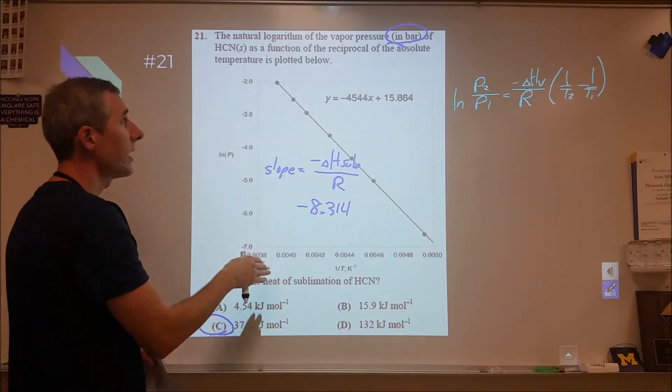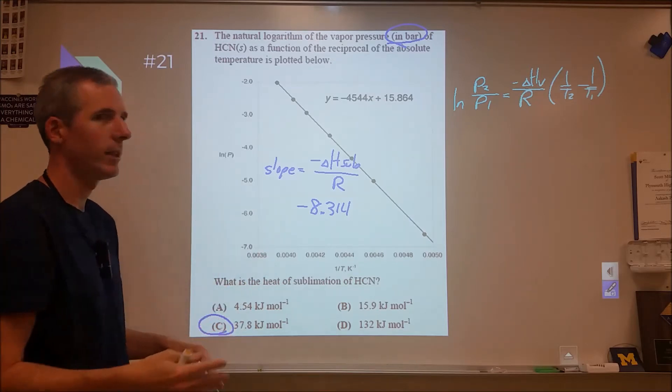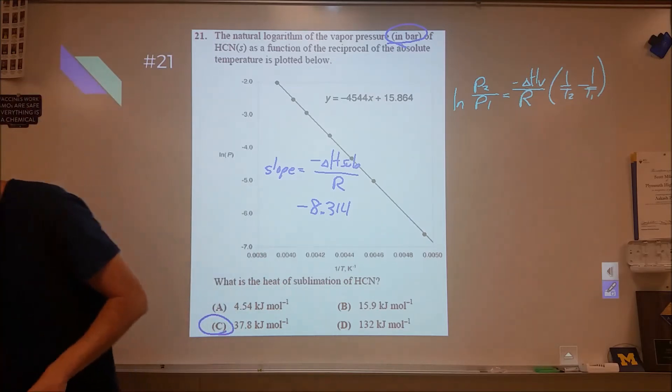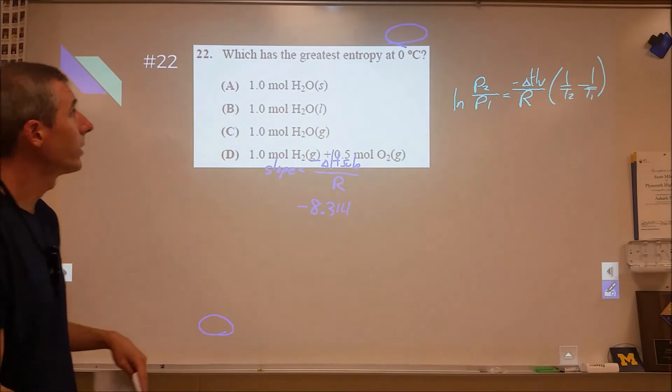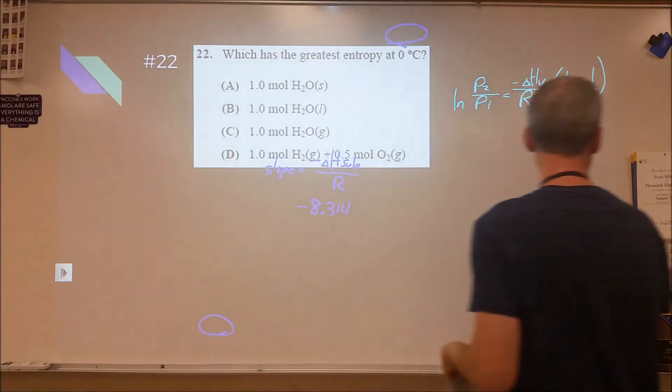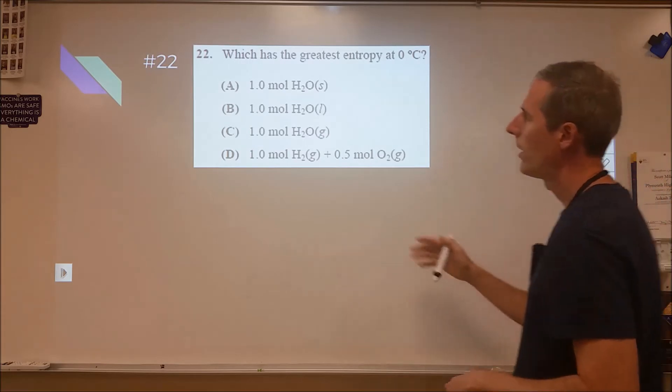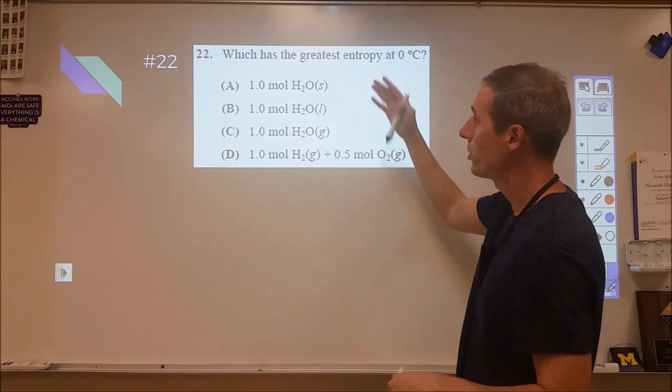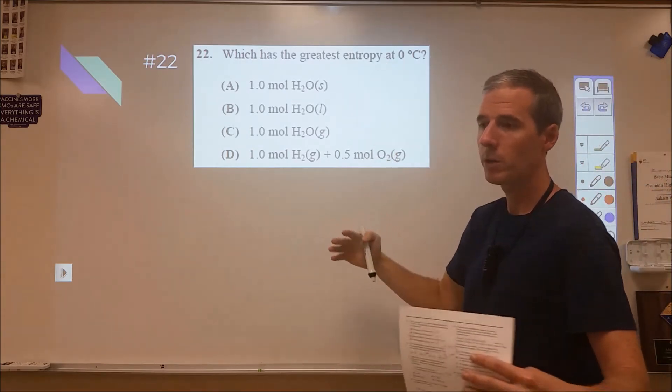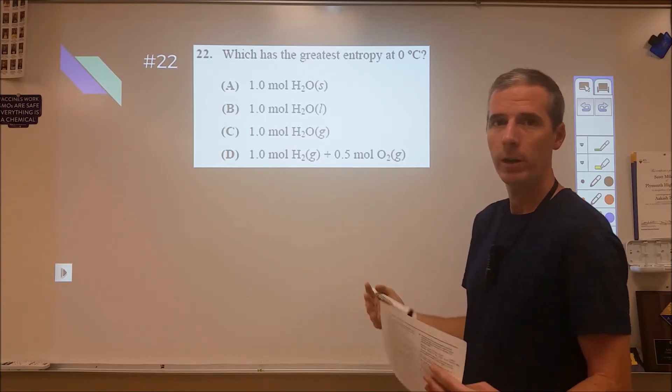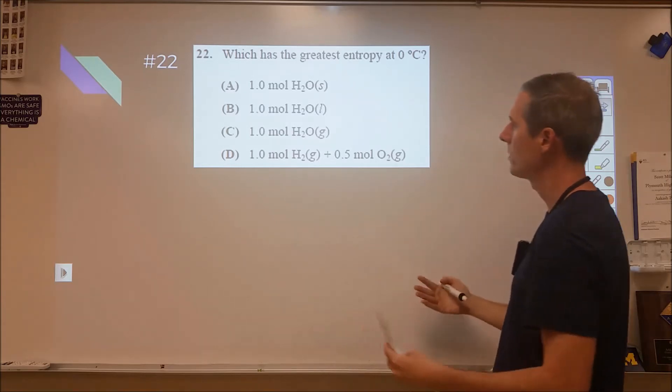I'm not exactly sure if that's a mistake or if somehow that cancels out in that process, but marked right, so I didn't worry about it too much. Twenty-two is just a qualitative entropy question. Usually on this level of test for entropy, you're looking for bigger molecules with more things in them to have greater entropies because they have more means to store energy.